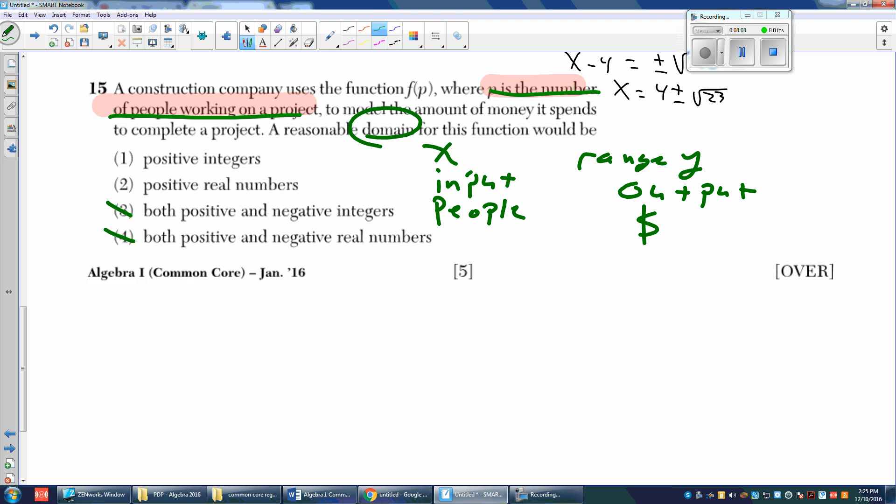Now think, which one of these are fractions? Which one of these are numbers that can't be like half of a person? Integers are positive and negative whole numbers. That's why I don't like this because they said positive integers. So just the positive integers, that would be 1, 2, 3, 4, 5, 6, 7, 8, 9, 10, also known as counting numbers.